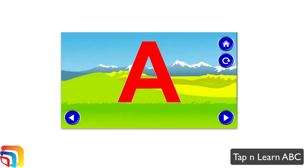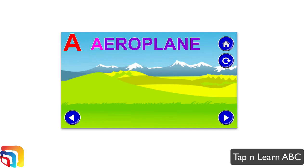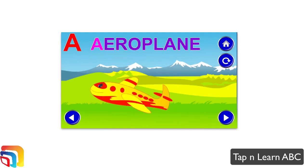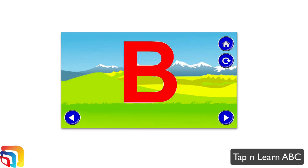So you can see here, A for aeroplane. As they display an image, it also shows you the letter, so it goes from A to Z or whatever letter you want to click on here. You can go in alphabetical order, and it shows you a word associated with that letter and then an object and/or animation related to that letter.